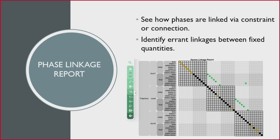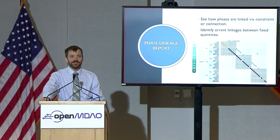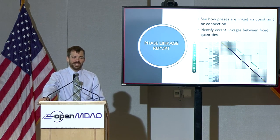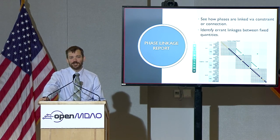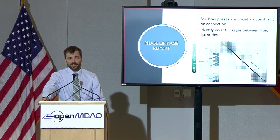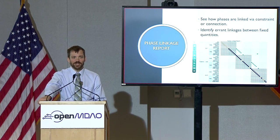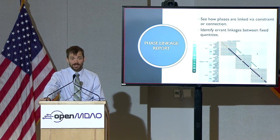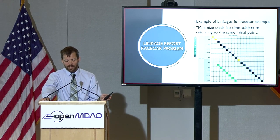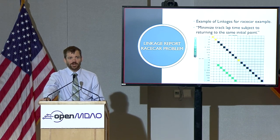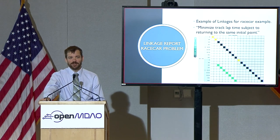Tad built something that looks a lot like an N2 — it's sort of a Dymos-specific N2. This linkage report tells you how continuity flows in your variables in your model. It's easy to build up a many-phase trajectory and forget to link two phases together, having mass be discontinuous between phases. We've already gotten really good feedback on this. It leverages the existing OpenMDAO report system — it's the first report we've built outside of OpenMDAO that uses that system and automatically builds it for the user.